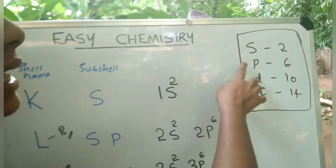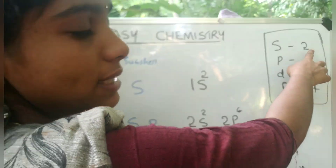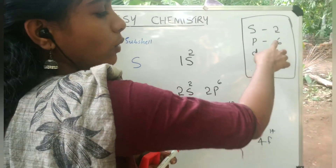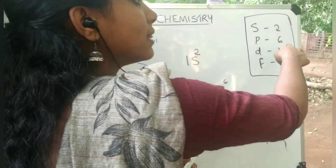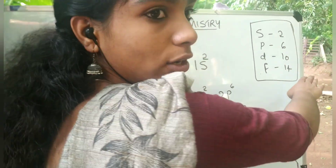S has a maximum capacity of 2 electrons, P has 6 electrons, D has 10 electrons, and F has 14 electrons.